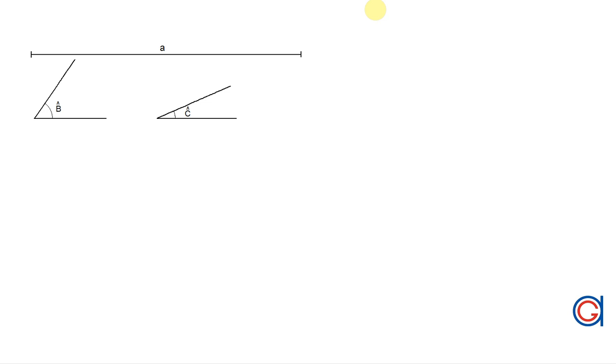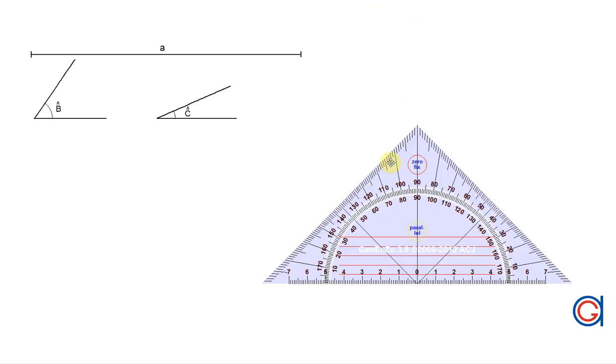Hello, today we are going to learn how to draw a triangle given one side A and its two adjacent angles B and C, as can be seen here on the screen.